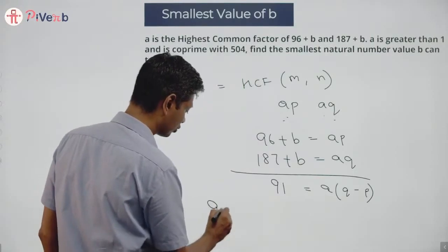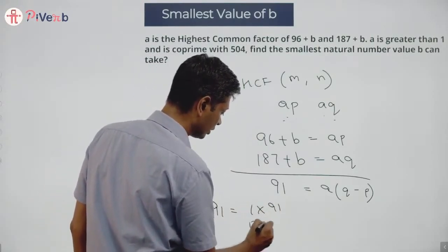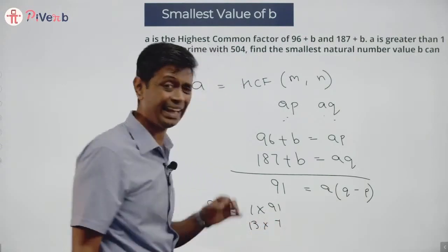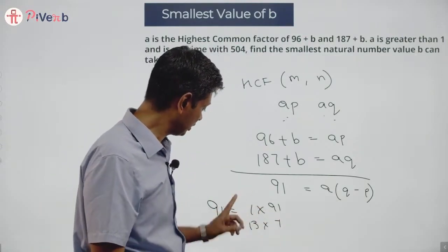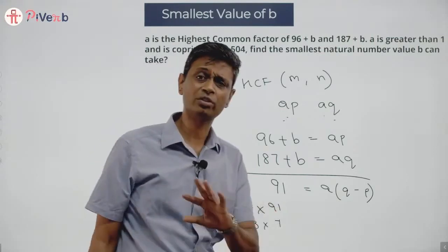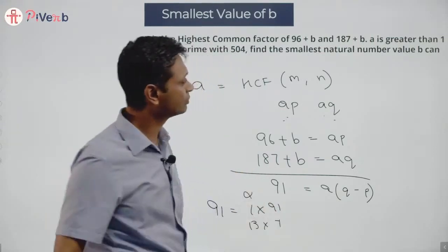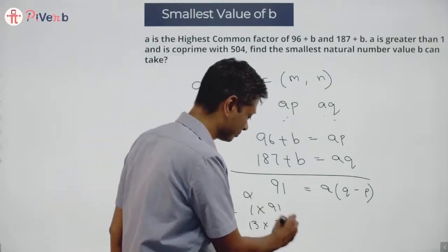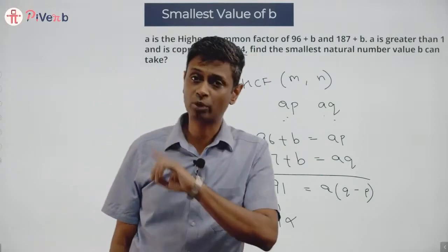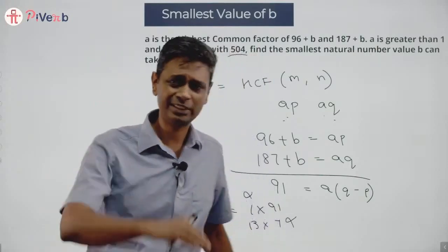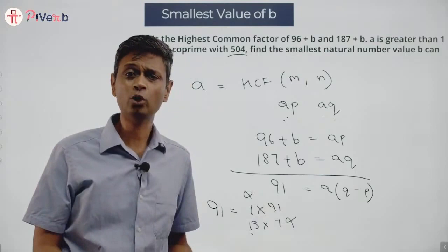91 can be written as 1 times 91 or 13 times 7. So the factors of 91 are 1, 7, 13, and 91 — one of these four must be A. A is not 1 since A is greater than 1. A is not 7 because 504 is a multiple of 7 and A must be coprime with 504. So A is either 13 or 91.